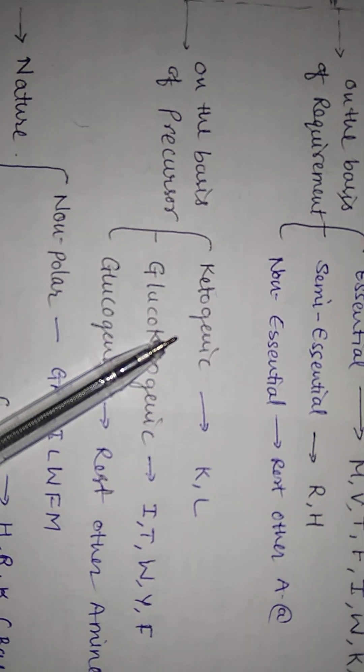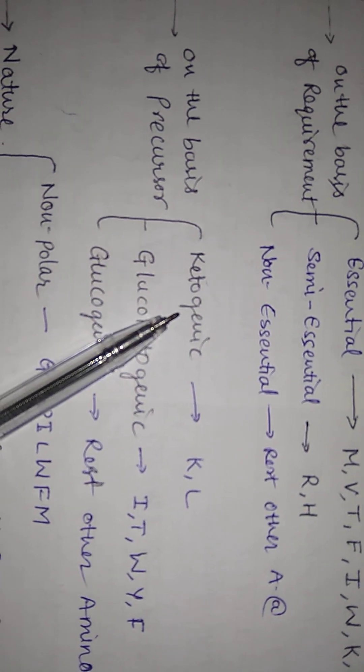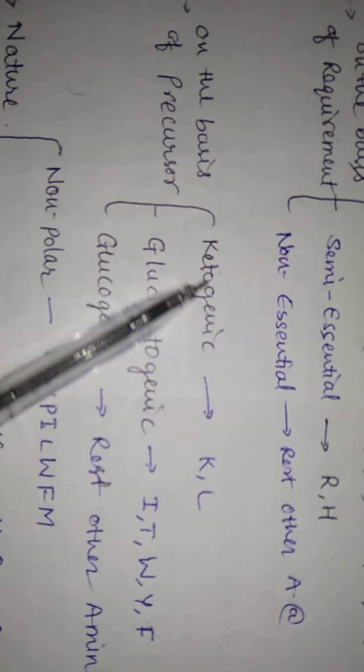On the basis of precursor means if we catabolize the amino acid, then as a substrate it can be used in formation. If it is ketone generation, we will call it ketogenic.